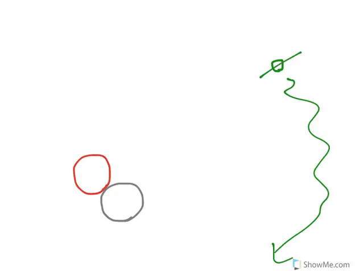Electrons have a negative charge, and protons have a positive charge. There's another type of particle that has no charge, it's called a neutron.